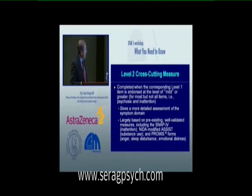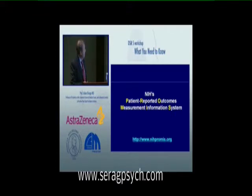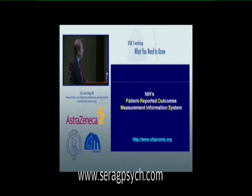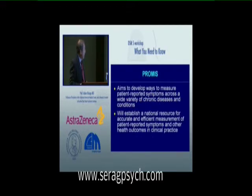The Level 2 measures are based on pre-existing, well-validated tools, including inattention scales for kids, the NIDA-modified ASSIST measure for substance use, and the PROMIS forms — Patient Reported Outcome Measurement Information System — for anger, sleep disturbance, and emotional distress. These are NIH-developed symptom-based outcome measures that the NIH is trying to have clinicians in primary care settings use to assess patients at the beginning, during, and at the end of treatment for all kinds of chronic diseases.